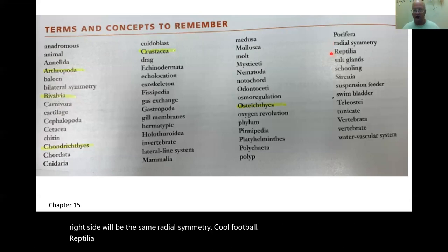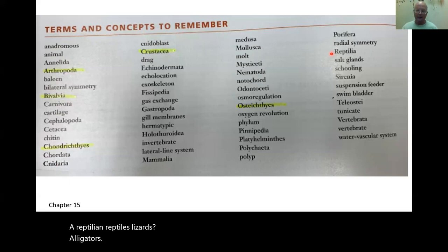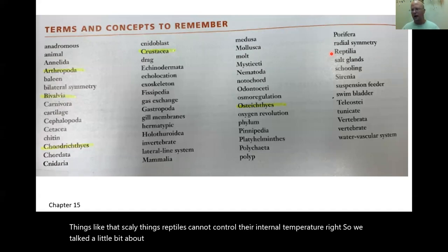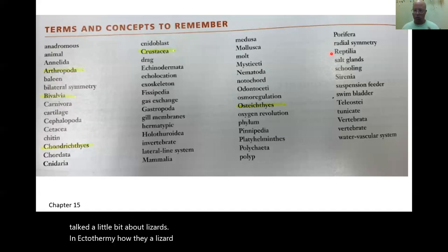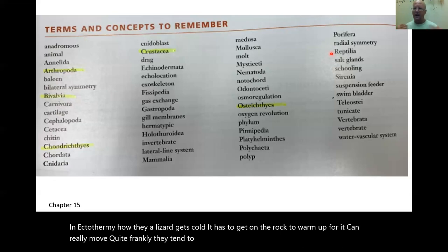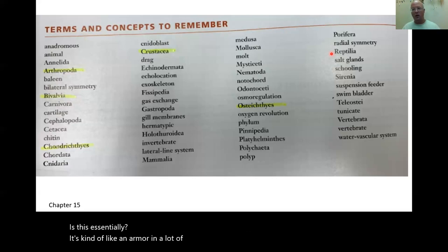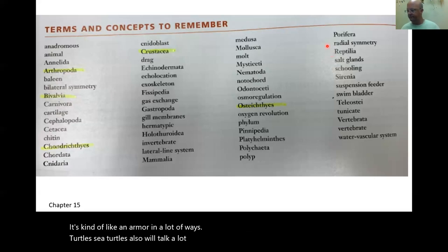Reptilia — reptiles. Lizards, alligators, scaly things. Reptiles cannot control their internal temperature — we talked about ectothermy. A lizard gets cold and has to get on a rock to warm up before it can move. They tend to have heavy scaly skin, like armor. Sea turtles are also reptiles — we'll talk a lot about sea turtles later on.